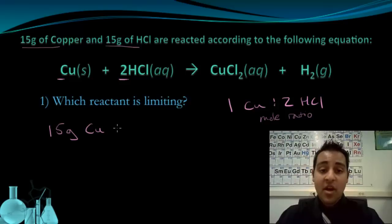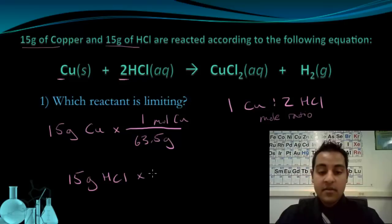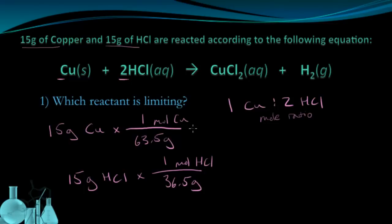So 15 grams of copper, we know that one mole of copper has a mass of 63.5 grams. We can also do this with hydrochloric acid. So 15 grams of hydrochloric acid, we know that one mole of HCl has a mass of 36.5 grams. If we go ahead and solve these, we will see that we have 0.24 moles of copper and 0.41 moles of hydrochloric acid. Now at this point, I have the moles of each substance that are being reacted. These are the physical amounts of what I have.